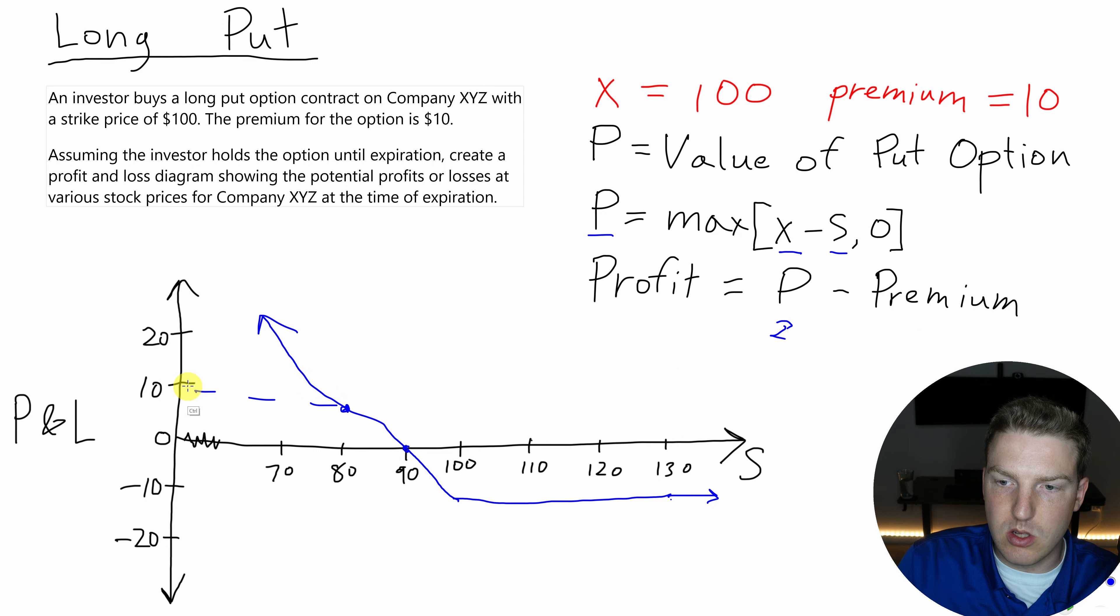And we can see with this long put option contract, the worst we can ever do is lose our original $10 right here. But the best we could ever do is equal to basically the exercise price minus the premium that we paid. So if this stock's price went all the way down to $0, I can sell a stock for $100 that's worth nothing. That put option would be worth $100, but then I'd lose my $10 premium and I'd be up $90 total.